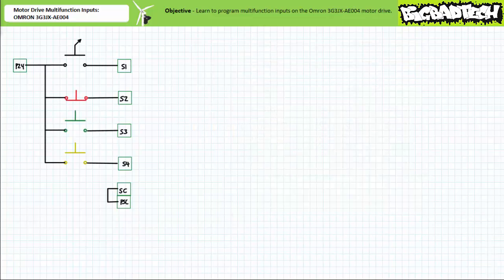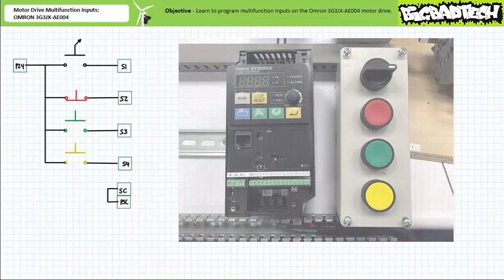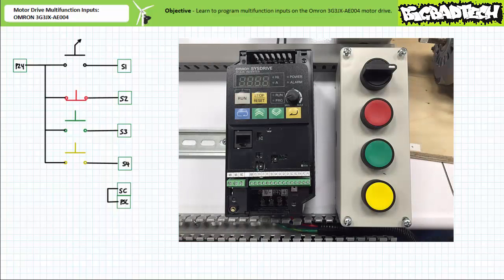Now let's wire up some inputs. For the purposes of this particular lecture, we'll only be making use of two input devices. However, to demonstrate other functions in later lectures, we'll wire up enough inputs to fill a four-hole push button enclosure. Let's use a normally open maintain contact selector switch as input 1, a normally closed momentary contact red push button as input 2, a normally open momentary contact green push button as input 3, and a normally open momentary contact yellow push button as input 4.